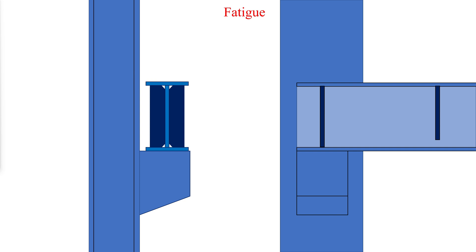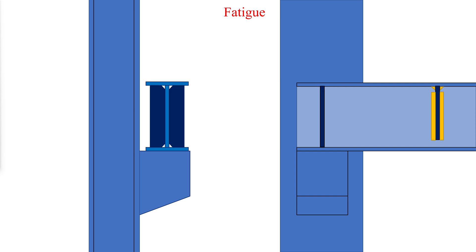Fatigue cracks have occurred at the connection between the bearing stiffener and the girder top flange, specifically in details where the bearing stiffener was fillet welded at the underside of the top flange. AIST TR-13 recommends that CJP welds be used to connect the top of the bearing stiffeners to the top flange of the girder. The bottom of the bearing stiffener is preferred to be fitted to bear on the bottom flange without welding. All stiffener to girder web welds should be continuous, and the same recommendations apply to intermediate stiffeners.